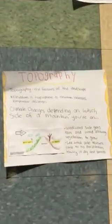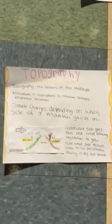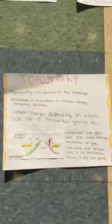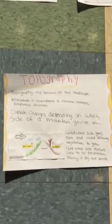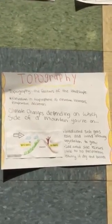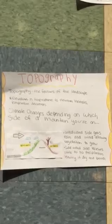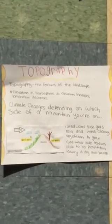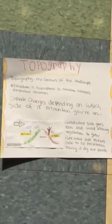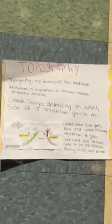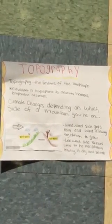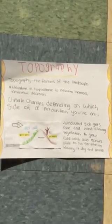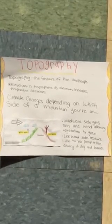For topography, topography is the features of the landscape and elevation in the troposphere. As elevation increases, temperature decreases. Climate changes depending on which side of the mountain you're on.